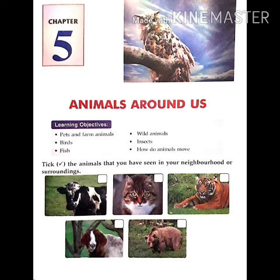हमारे आसपास के जानवर, यानि वो जानवर जो हमारे आसपास रहते हैं या दिखाई देते हैं। In this chapter, we will read about some topics. These are: first, pets and farm animals; second, birds; third, fish; fourth, wild animals; fifth, insects; and sixth and last, how do animals move?